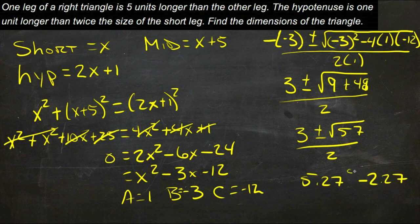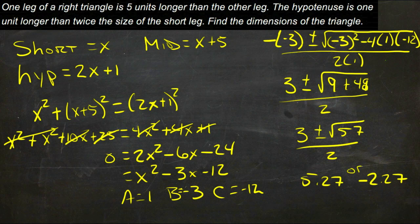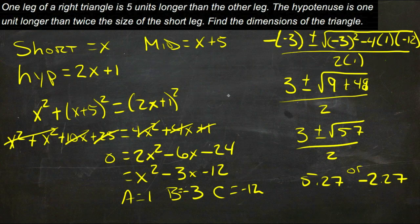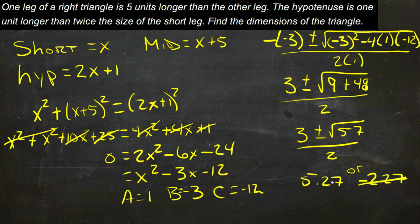So those are our two solutions, and then we need to run them back through and see if either one of them doesn't make any sense. If we're looking at the sides of a triangle, negative 2.27 doesn't make any sense because it can't be a negative length, so that one goes away.